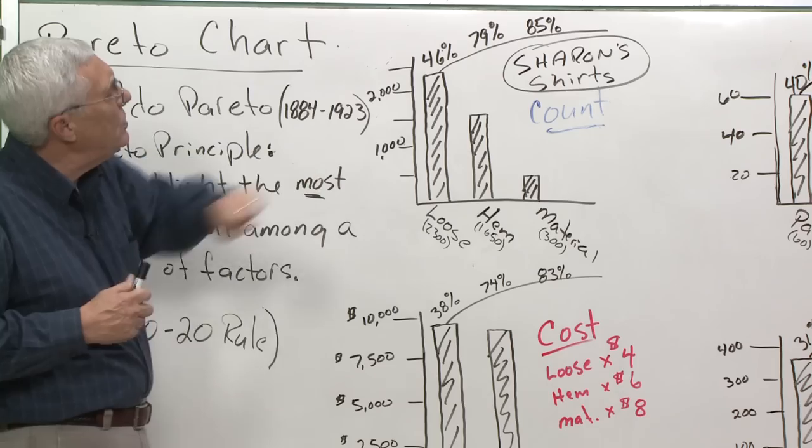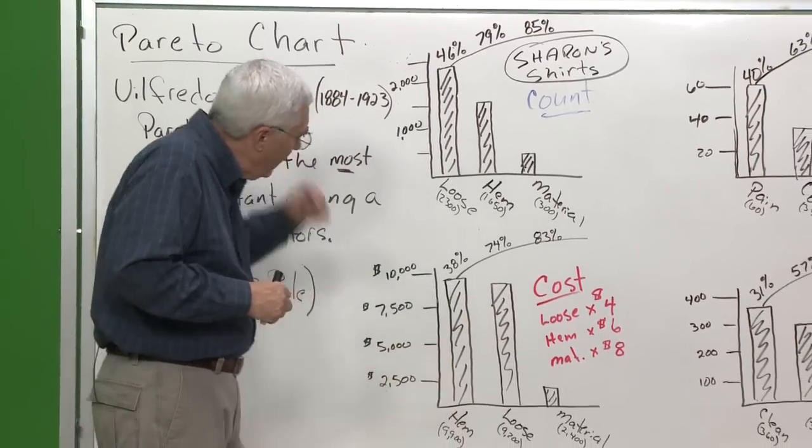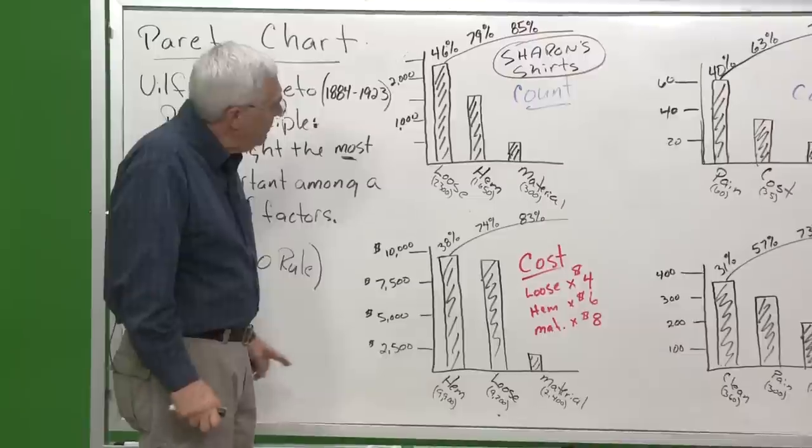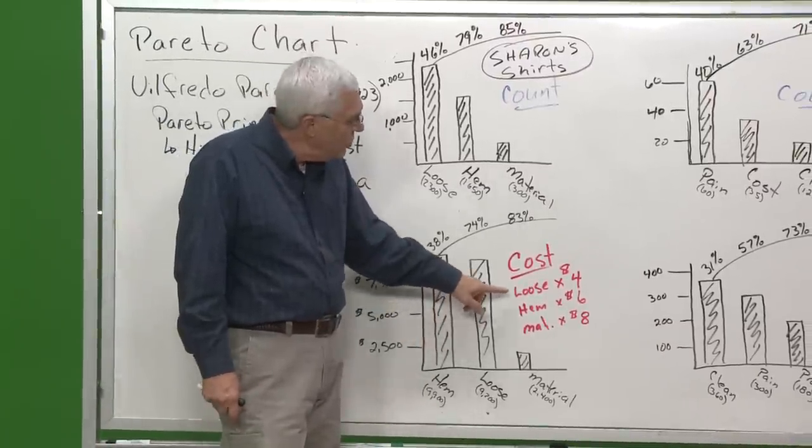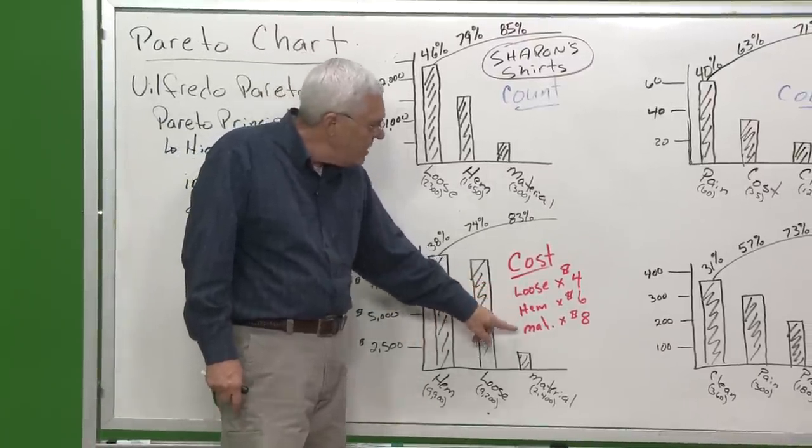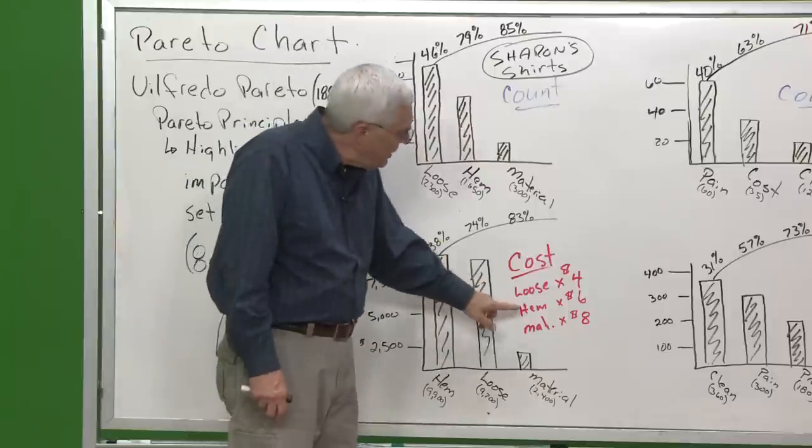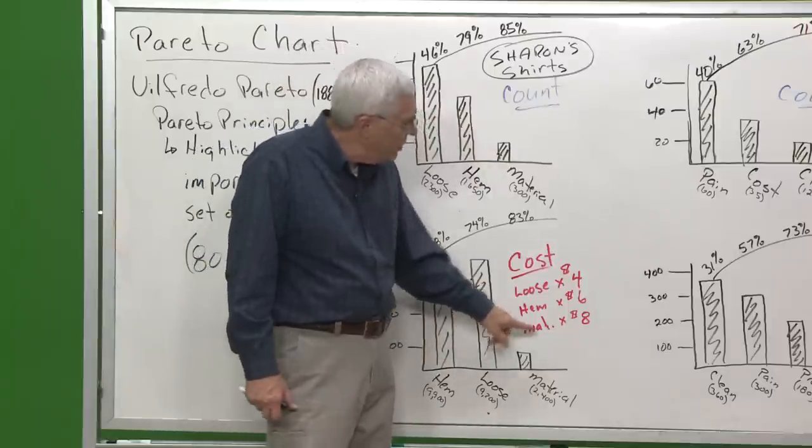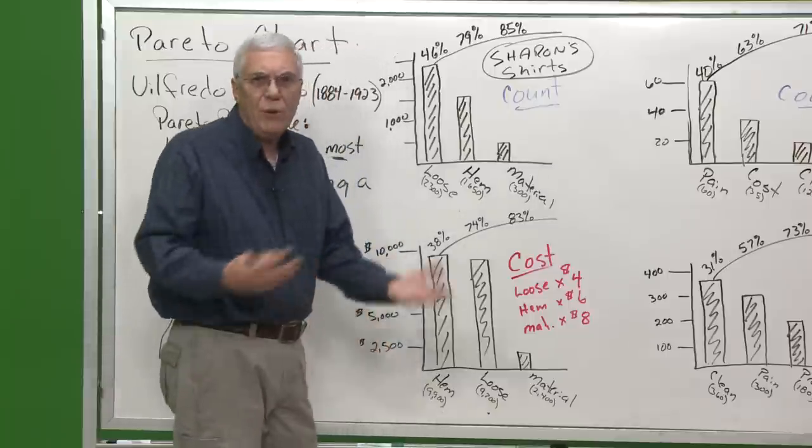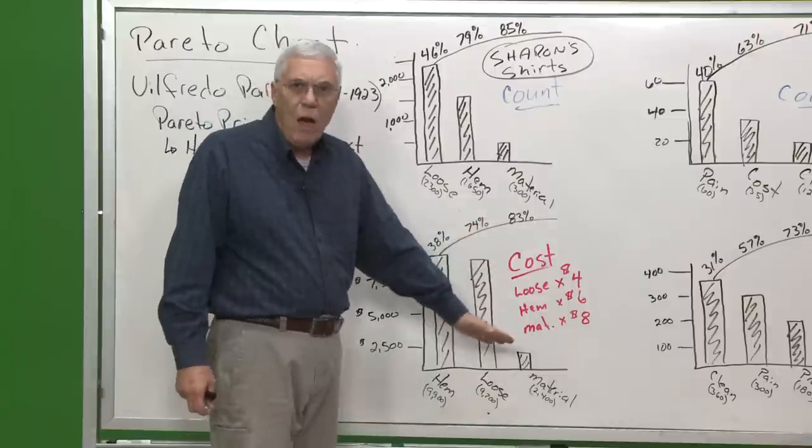But I'm not going to do just that chart. I'm now going to do a second Pareto chart on Sharon's. And what I've done here is, this is the hard thing for most companies or industries, I have been able to associate a cost to each one of these defects. Every loose thread costs me $4 to fix. Every shirt that has a problem hem costs me $6 to fix, and every material flaw costs me $8 to fix. Now, these are just arbitrary numbers, but it gives you an idea.